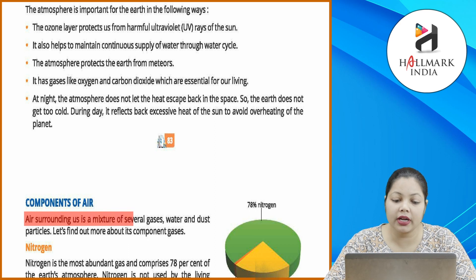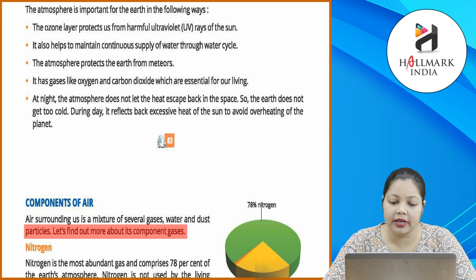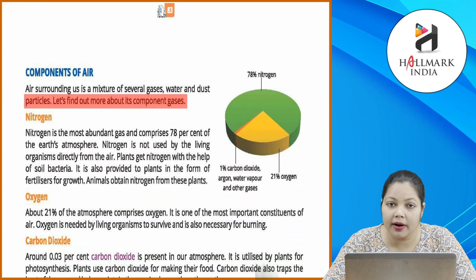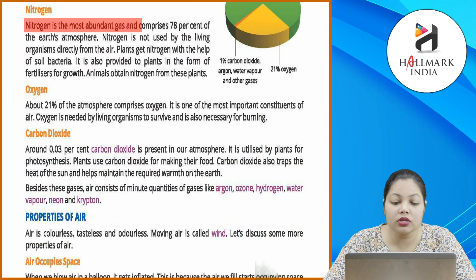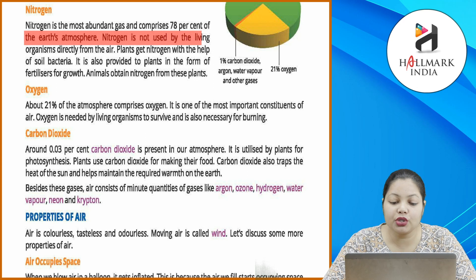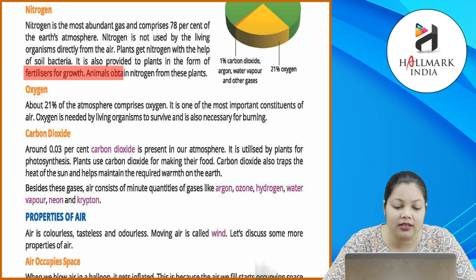Components of air: air surrounding us is a mixture of several gases, water and dust particles. Nitrogen is the most abundant gas and comprises 78% of the earth's atmosphere. Nitrogen is not used by living organisms directly from the air. Plants get nitrogen with the help of soil bacteria. It is also provided to plants in the form of fertilizers for growth. Animals obtain nitrogen from these plants.